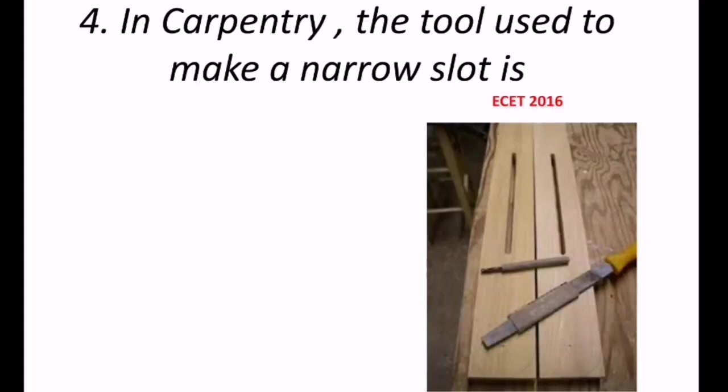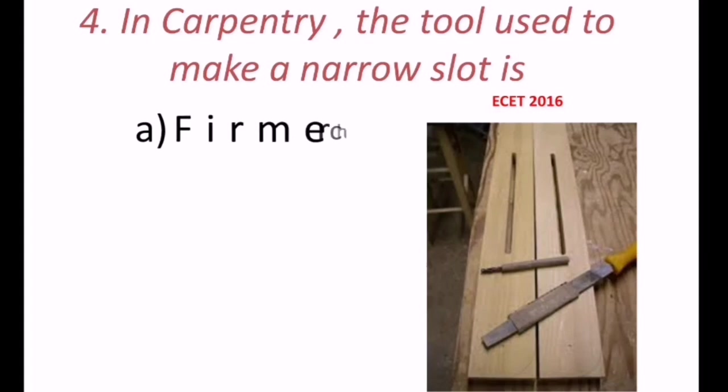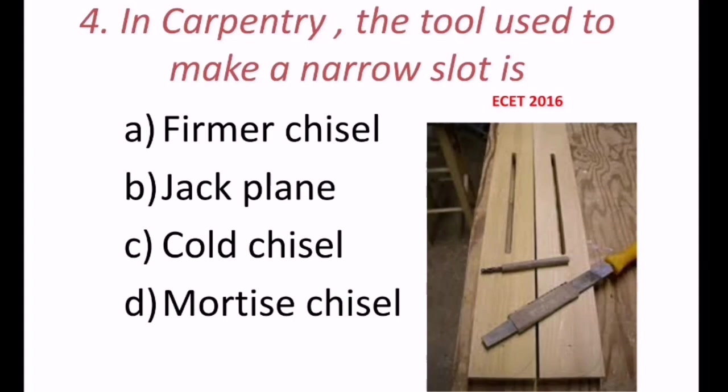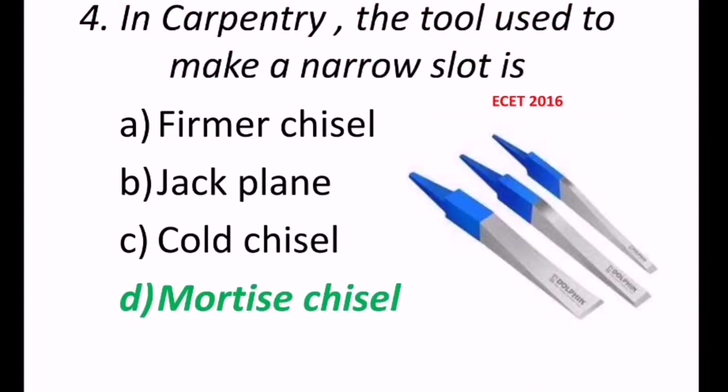4th question reads, In carpentry, the tool used to make a narrow slot. So that is, may be firmer chisel, jack plane, coal chisel, or mortise chisel. So the answer is, mortise chisel is used to create or make narrow slot.